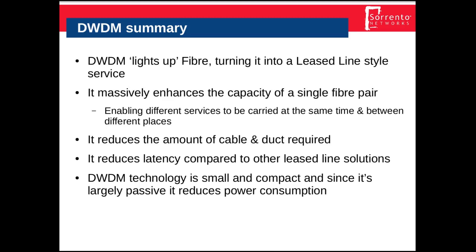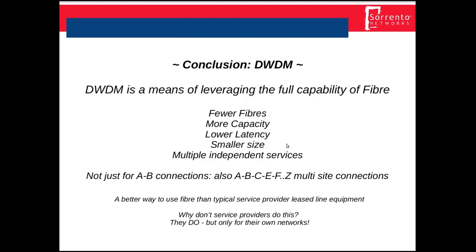DWDM technology is small and compact, and since it's largely passive it significantly reduces power consumption compared to alternatives like Ethernet switching or MPLS. In conclusion, DWDM leverages the full capacity of fibre, resulting in fewer fibres required, more capacity, lower latency, smaller equipment sizes, and multiple independent services carried simultaneously. It's well known for high-capacity A-to-B connections, but also highly useful for multi-site distribution networks.